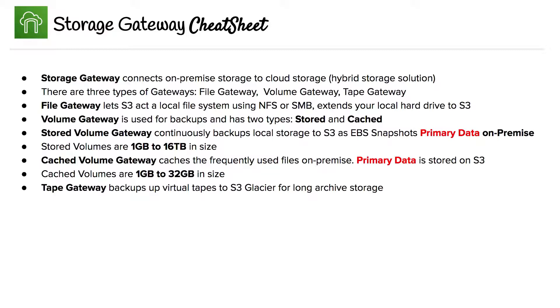File gateway lets S3 act as a local file system using NFS or SMB. The easy way to think about this is think of a local hard drive being extended into S3.